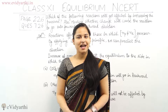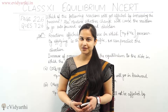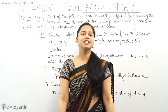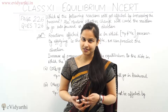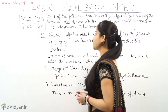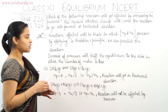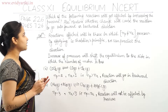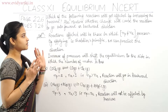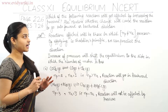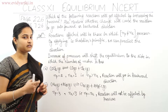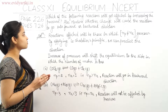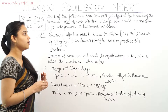Hi everyone, I'm Rakhi and in this session I'm going to discuss question number 26, on page number 226 of chapter number 7, Equilibrium. The question asks which of the following reactions will get affected by increasing the pressure. We also need to mention whether the change will cause the reaction to go in the forward direction or backward direction.